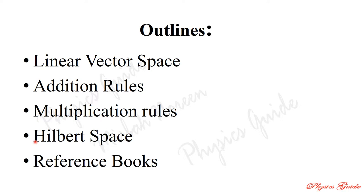The two elements of a linear vector space are vectors and scalars. We discuss and prove the properties of addition rules and multiplication rules. If we satisfy these conditions, rules, and properties, then we can say that this is a linear vector space.